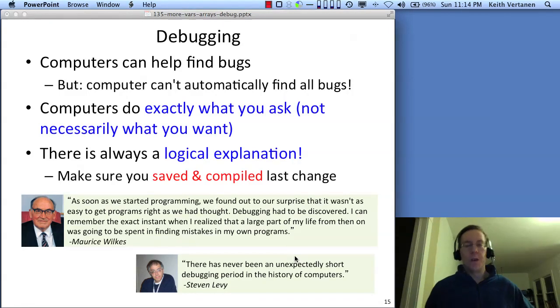It would be really groovy if the computer could just figure out where the problem is for you. Now, things like the Eclipse IDE, they're very good at pointing out some mistakes. It can definitely spot some errors and just point them out and in some cases even recommend a solution. But it is not possible for a computer to automatically find all bugs. It is simply impossible. And debugging, the computer is doing exactly what you told it to do. But what you told it to do isn't exactly what you intended it to do. It's not necessarily what you wanted but it is what you told it to do. There is always, always, always a logical explanation for the problem.